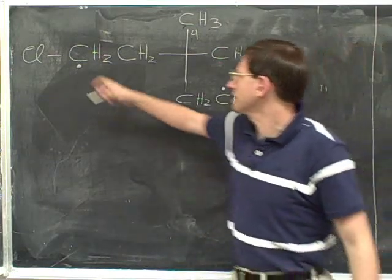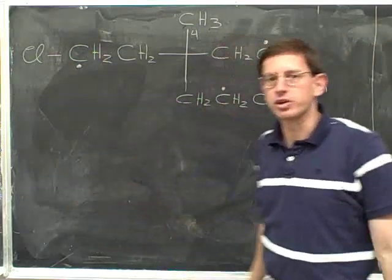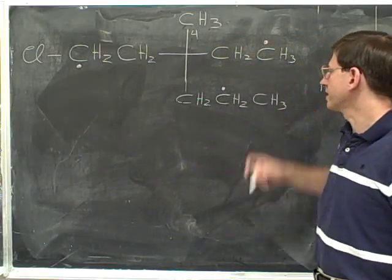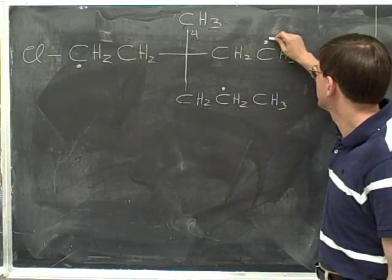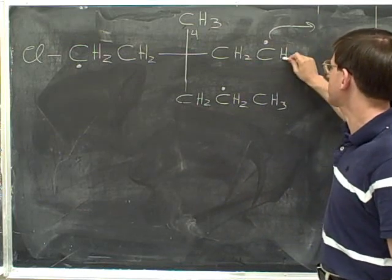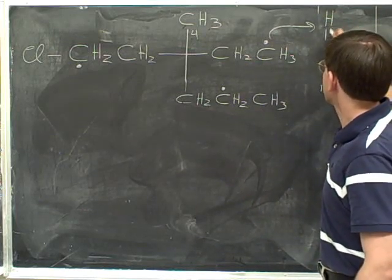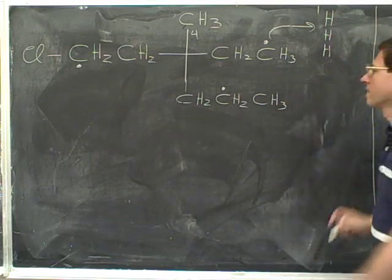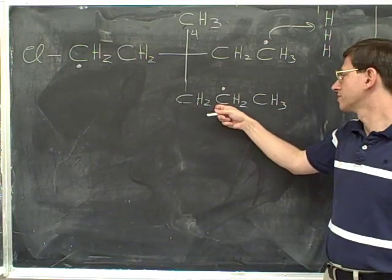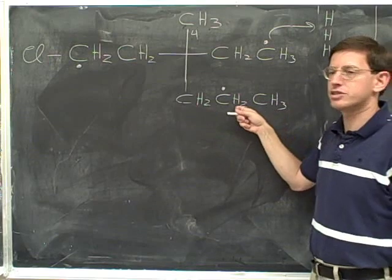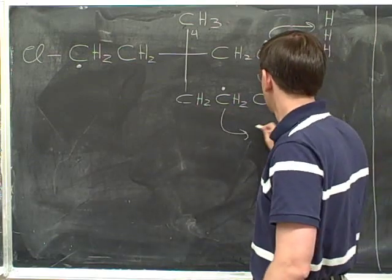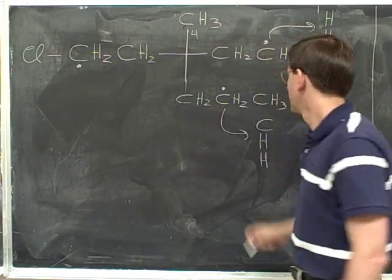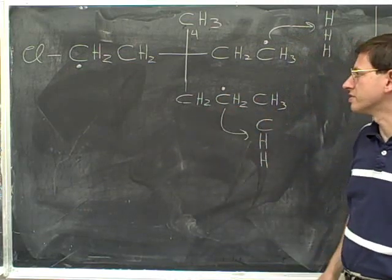Now we have three dots indicating the three atoms we're comparing at this point, and for each we have to make a list of the three atoms it's attached to. The right carbon is attached to three hydrogens — hydrogen, hydrogen, hydrogen. The bottom carbon is attached to a carbon and two hydrogens.